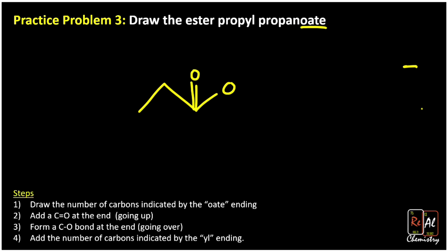And then it says add the number of carbons indicated by the YL ending. So this is a propyl, so we're going to need three more. One, two, three. So that's propyl propanoate.